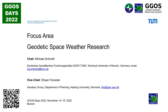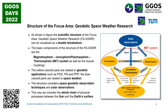Ehsan Forootan is the vice chair from Denmark, taking over this role in 2019 from Klaus Berger. The focus area was installed in 2017. We had our first larger meetings at the IUGG in Montreal in 2019. At that meeting, we set up the structure of the focus area, visualized here by a so-called double tetrahedron. The basic component in the middle is the magnetosphere-ionosphere-plasmasphere-thermosphere part, also denoted as MIT or MIPT. We also include the couplings between all these different spheres, which involve physical dynamical coupling processes that need to be modeled.